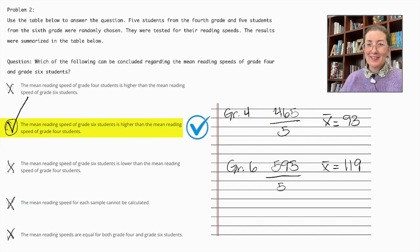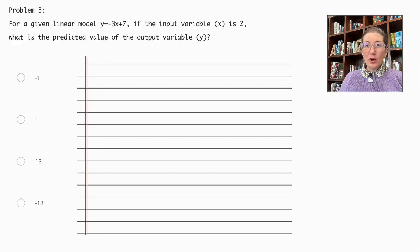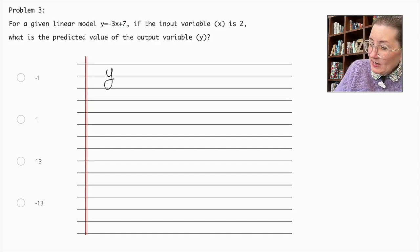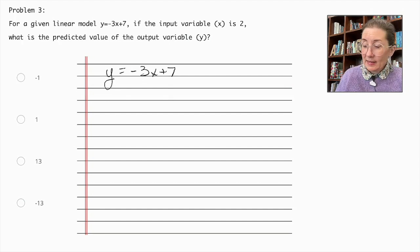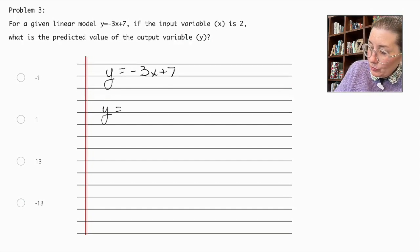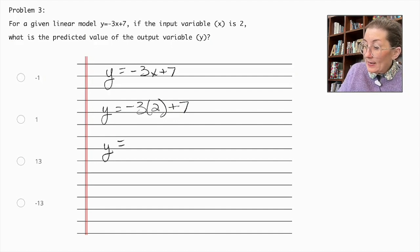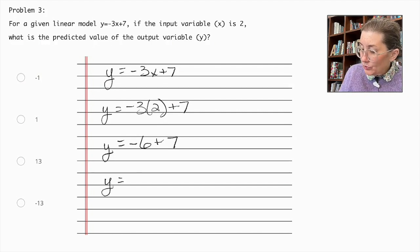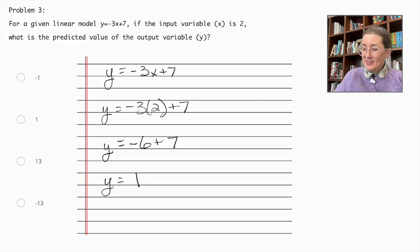Problem number 3. For a given linear model, y equals negative 3x plus 7. If the input variable x is 2, what is the predicted value of the output variable y? Let's do the math. Our equation is y equals negative 3x plus 7. Now, let's plug in the value for x. y is equal to negative 3 times 2 plus 7. y is equal to negative 6 plus 7, which means y is equal to 1. So, the correct answer here is 1.